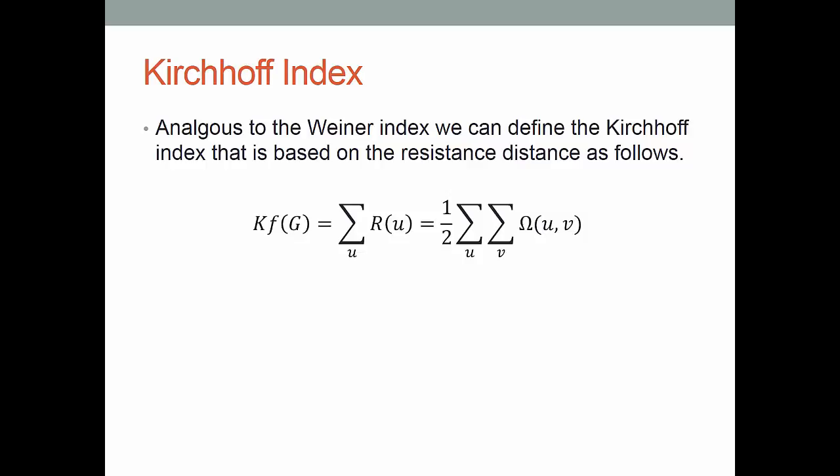So if we have a distance matrix based on the resistance distance then we can define a new index. And this is called the Kirchhoff index where we find the row sums using the resistance distance matrix.